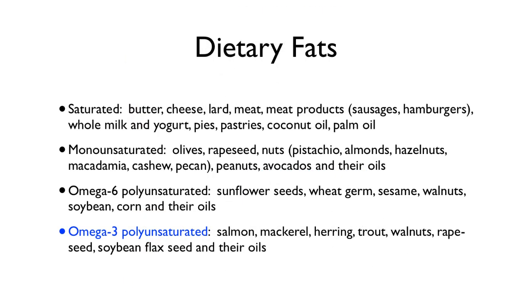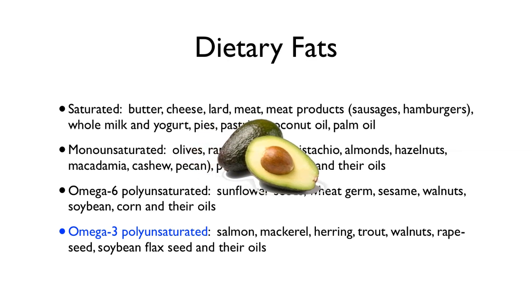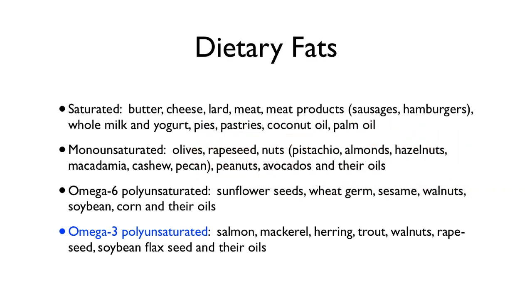In terms of diet, saturated fats tend to come from animal sources — things like butter, cheese, lard, meat, and meat products — though there are also some plant oils that are saturated. These are the fats you want to avoid or eat in limited quantities because they are the most difficult for your cardiovascular system to manage, and eating excessive amounts can lead to heart disease. Monounsaturated fats — 'mono' meaning one double bond — are found in lots of different nuts, olives, pistachios, avocados, and the oils from all of those.